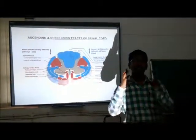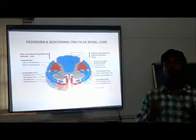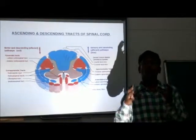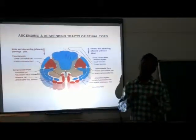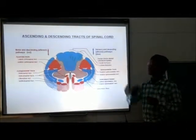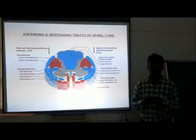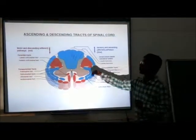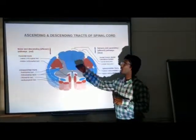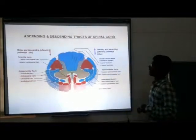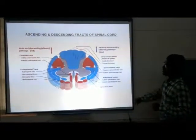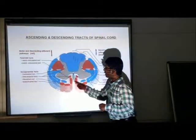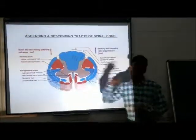The pyramidal tract means this tract originates from the central nervous system and forms a pyramidal decussation, that is why it is called the pyramidal tract. This tract is again divided into the lateral corticospinal tract and the anterior corticospinal tract. This is the lateral corticospinal tract and this is the anterior corticospinal tract.